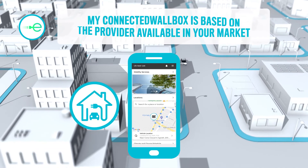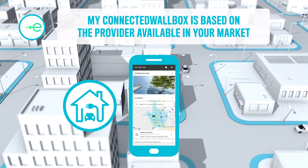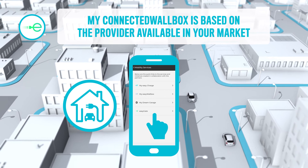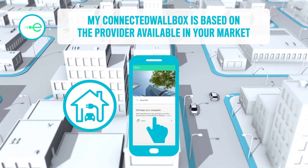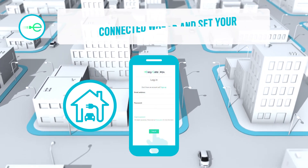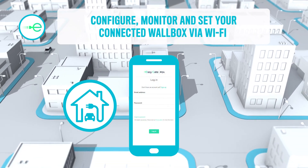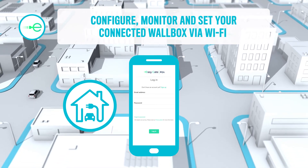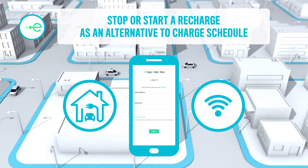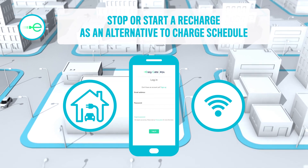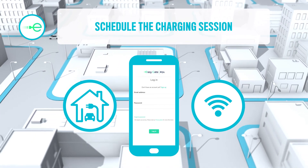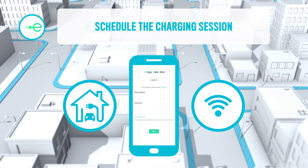My Connected Wallbox is a service based on the provider available in your market, NLX or NG. From the My Connected Wallbox dashboard, you can configure, monitor and set your Connected Wallbox via Wi-Fi, including stop or start a recharge as an alternative to charge schedule or simply schedule.